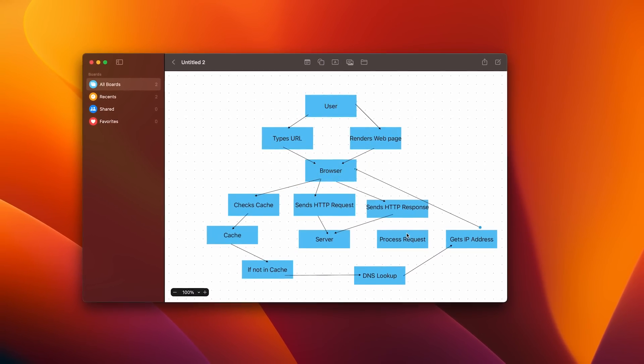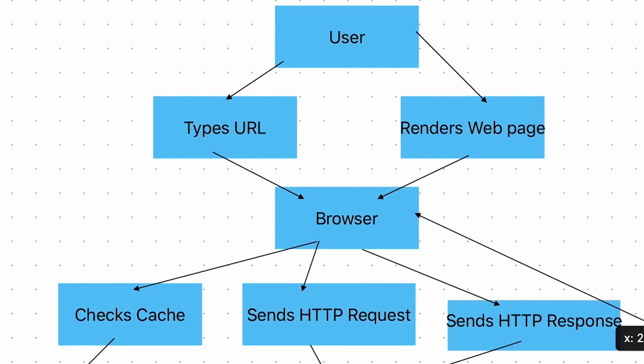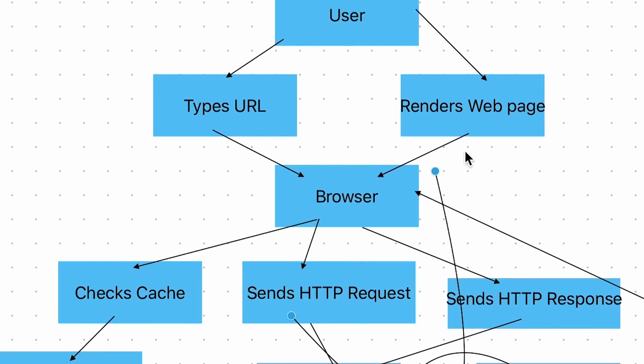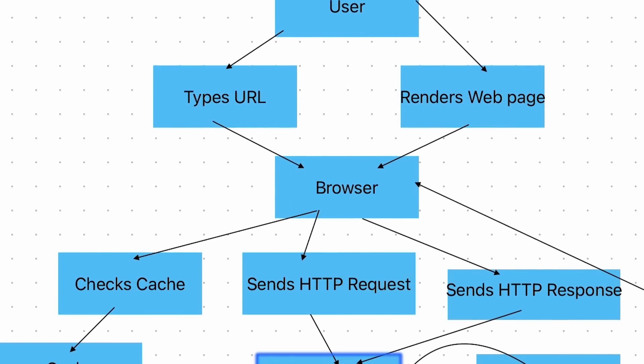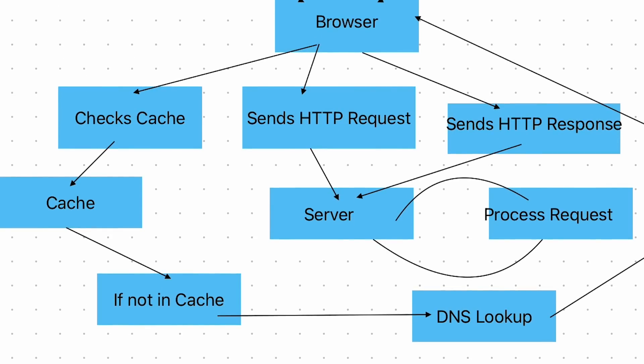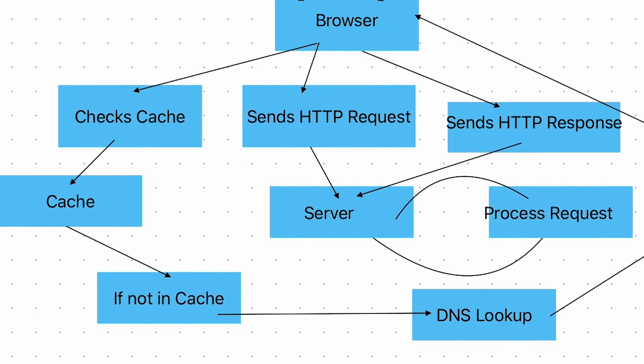Let's dive into this Freeform diagram of what happens when a user types a URL into a browser. First, the user types in the URL of the website they want to visit. The browser then checks the cache to see if it already has a record of the IP address for the requested URL — this makes it do less work if it exists. Then, if the IP address is not in the cache, the browser performs a DNS lookup to find the IP address of the server that hosts the website.